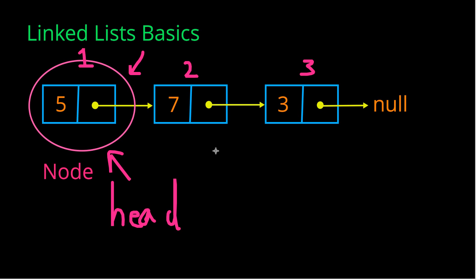Within each node, there are two separate elements. We have the value, and this value, as we can see in this node, is 7. It's important to realize that anything can go as a value inside of a node. For example, you can have a character, you can have a string, an integer like we have here, or even objects.